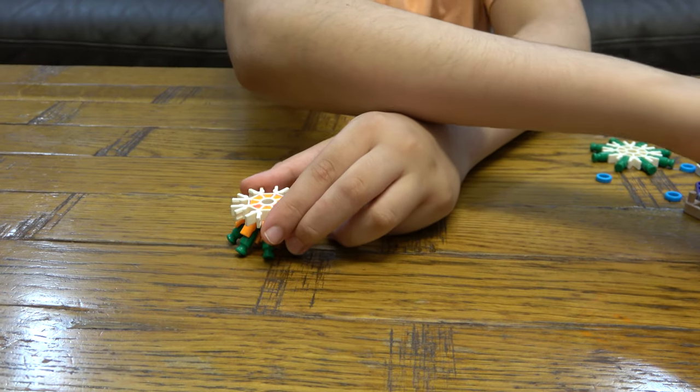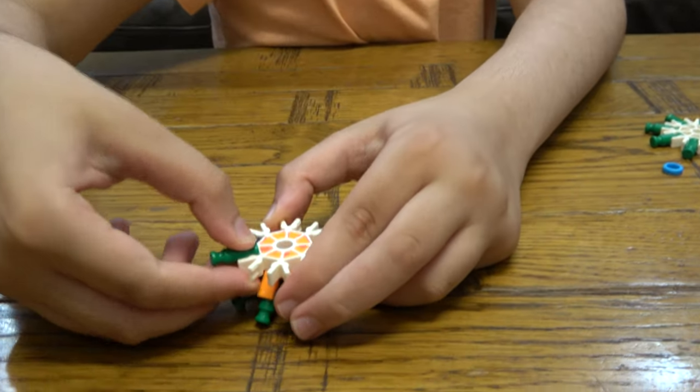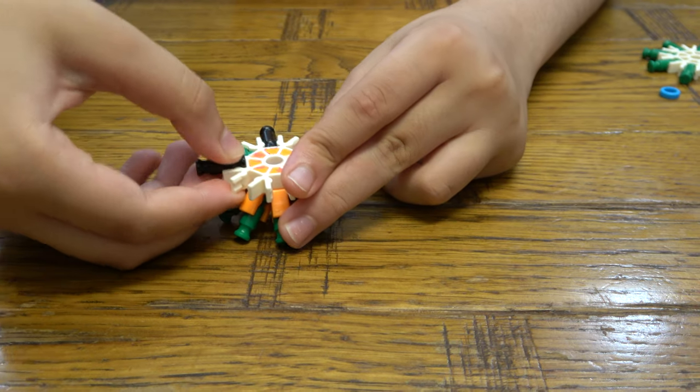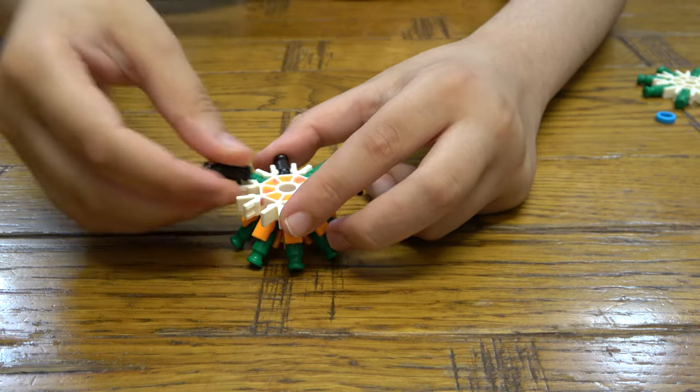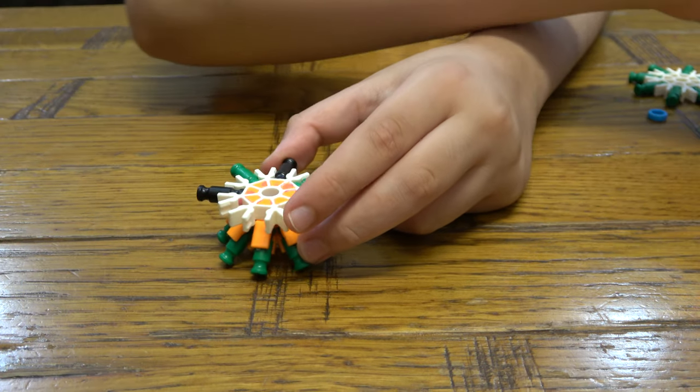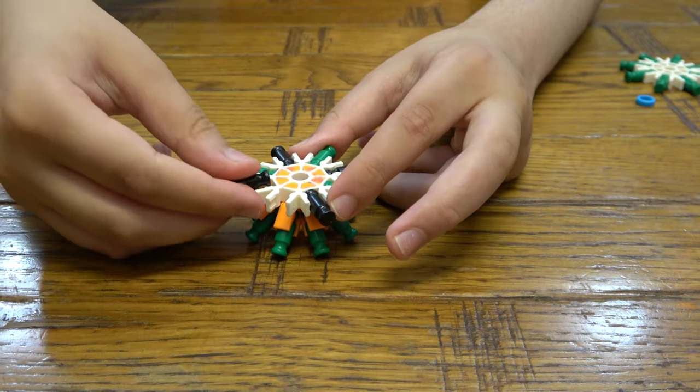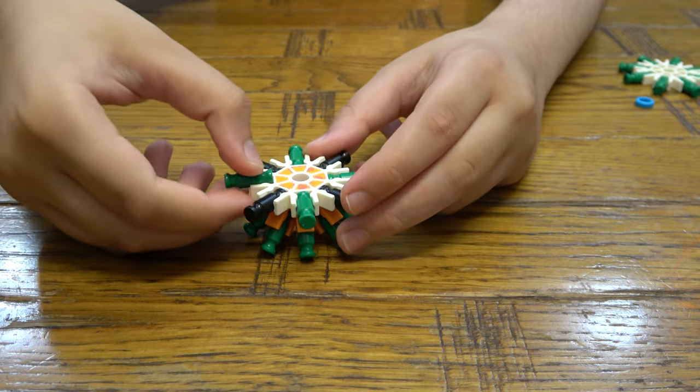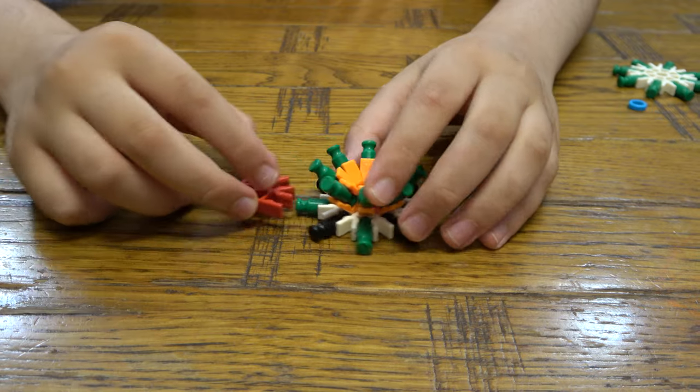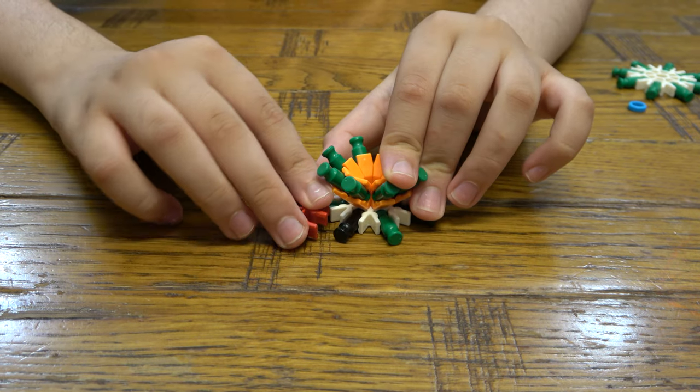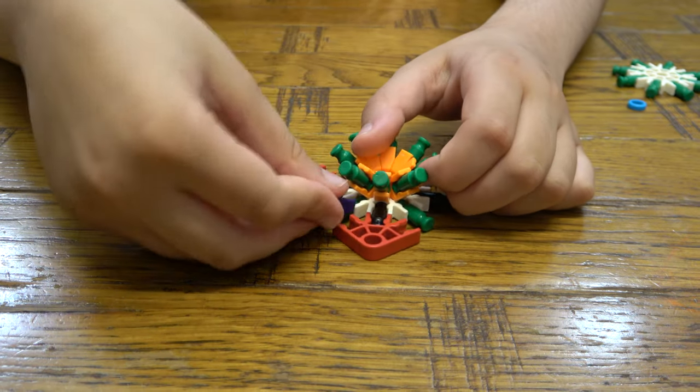And then next we're gonna turn it upside down. We're going to get, well you don't have to, but I'm gonna get two colors and I'm just gonna place it like... And then next we're going to put the red on black ones, and then we're gonna put purple on the green.